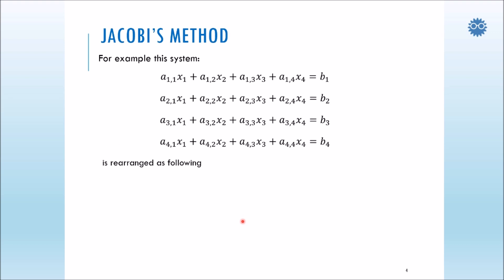Let's see how to apply this method to a system of four equations. We need to create a general form to solve this four-equation system. First, we should take one variable from each equation. For example, let's start with equation one — from equation one, we can take x1 to the left-hand side, and all other terms are taken to the right-hand side and divided by the coefficient of x1.